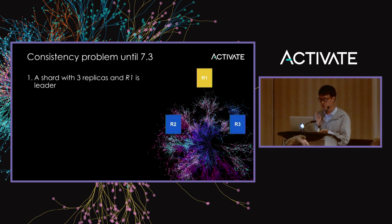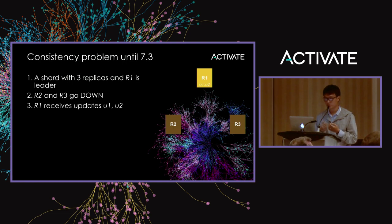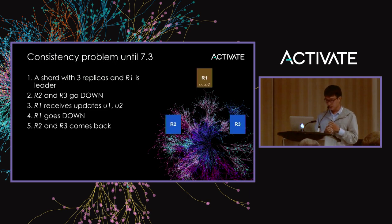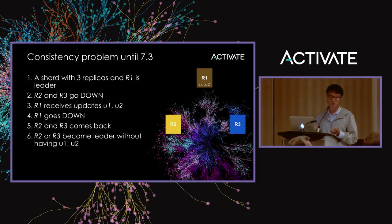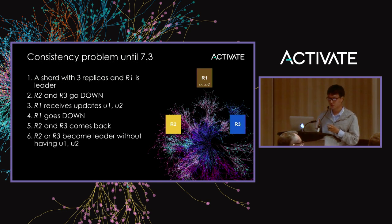Up until 7.3 we had this scenario: a shard with 3 replicas where R1 is the leader, R2 and R3 go down, and R1 successfully handles updates U1 and U2. If R1 then goes down and R2 and R3 come back, in theory neither should become leader because they don't have updates U1 and U2. But in previous versions of Solr, R2 or R3 could become leader. If R2 became leader, when R1 came back it would fetch the newest index from R2 — so U1 and U2 would be completely lost.